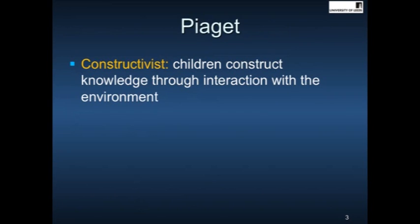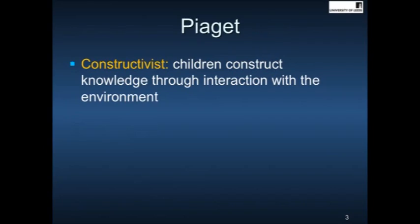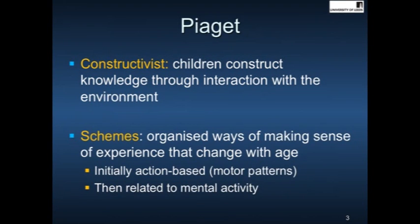Piaget believed that children actively construct knowledge through their interaction with the environment. So it's very important for the child to be interacting with the environment in order to construct knowledge about the world. Piaget said that children do this through the use of schemes. Schemes are organised ways of understanding the world and as the child interacts with the world these schemes develop and they improve with age.